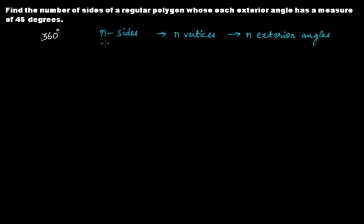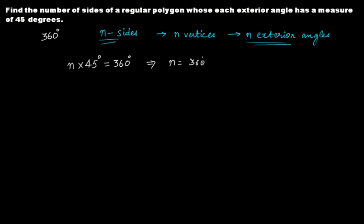If we assume that the regular polygon has n sides, then it will have n exterior angles. The measure of each exterior angle is 45 degrees. Therefore, n times 45 degrees has to be equal to 360 degrees, because the sum of the exterior angles of a polygon is equal to 360 degrees. Solving, we get n = 360 ÷ 45 = 8.